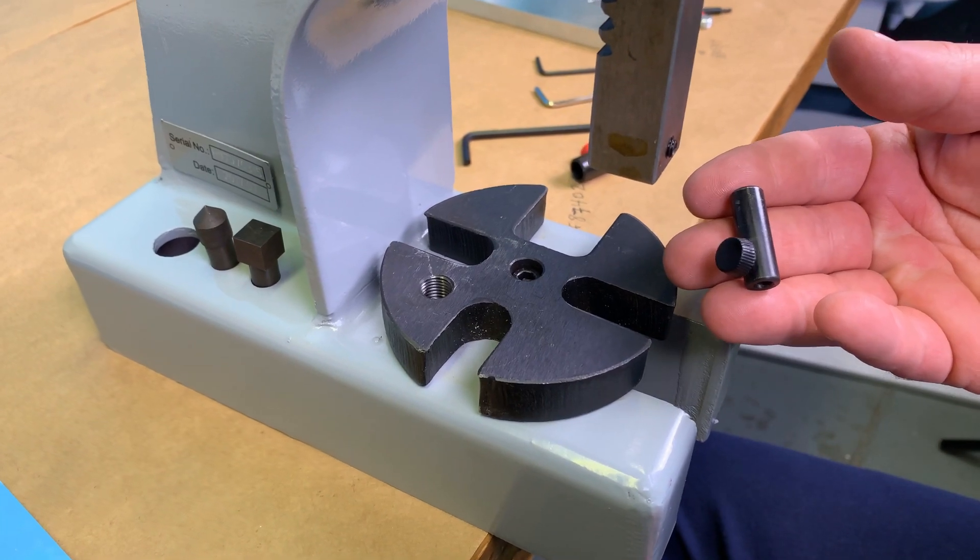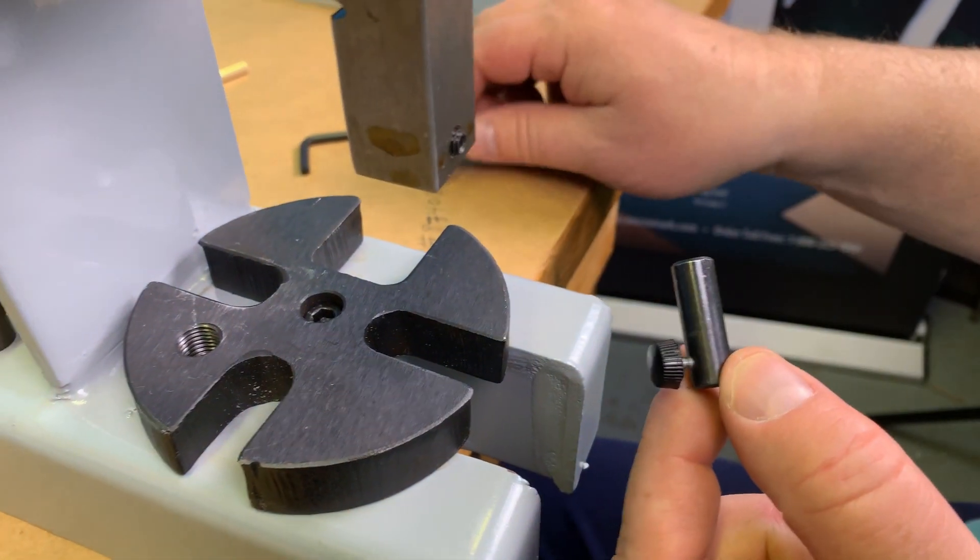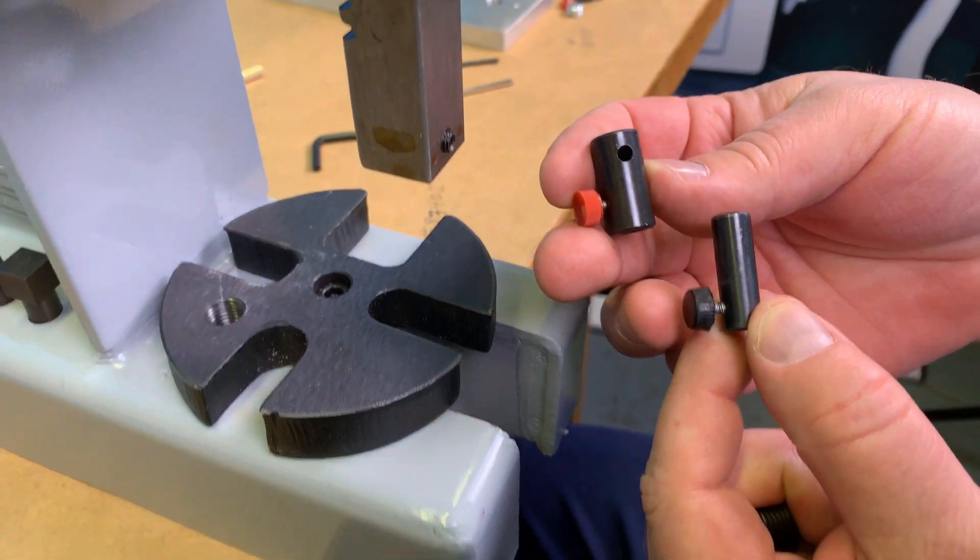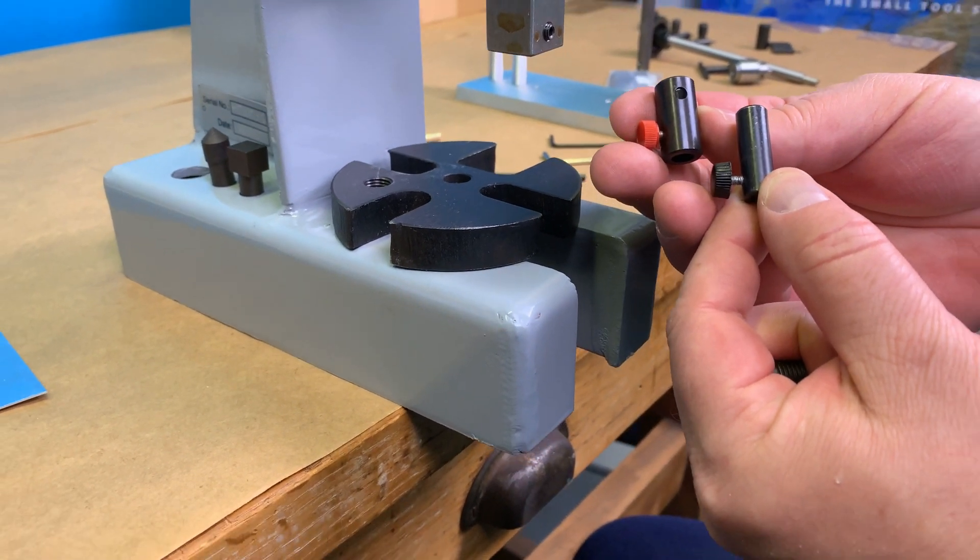With the arbor press you get a special adapter with which to mount the adapter for the punches and dies that are an accessory for this machine. And I'll show you how to do that now.